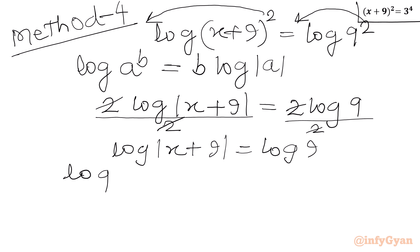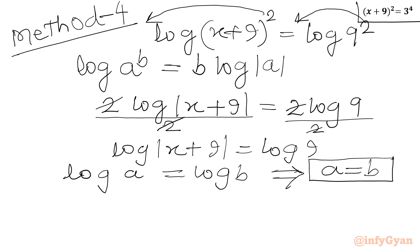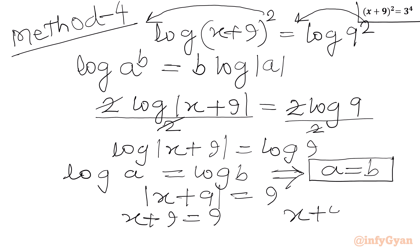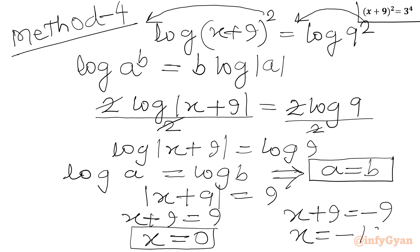We know that if log a = log b, then a = b. So we write |x + 9| = 9. This gives two equations: x + 9 = +9 and x + 9 = -9. Subtracting 9 from both sides of the first equation gives x = 0. From the second equation, subtracting 9 from both sides gives x = -18, which is our second solution.